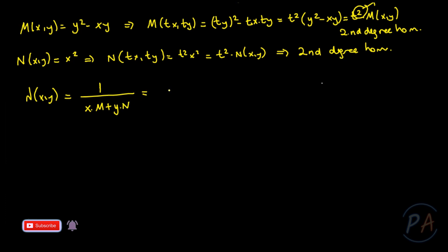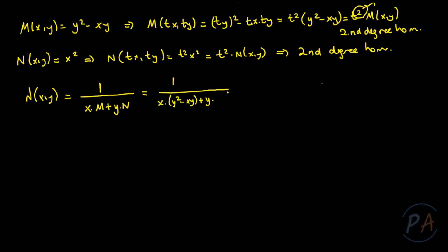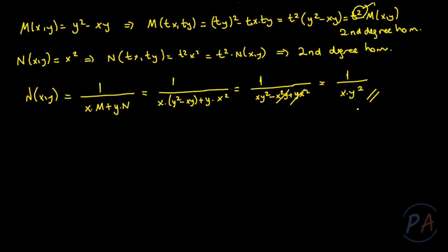This integrating factor can be determined by 1 over (x times M plus y times N). So x times M is (y² minus xy) and y times N is y times x², giving x(y² minus xy) + yx². Expanding: xy² minus x²y plus x²y. The last two terms cancel, so the integrating factor is lambda equals 1 over (xy²).